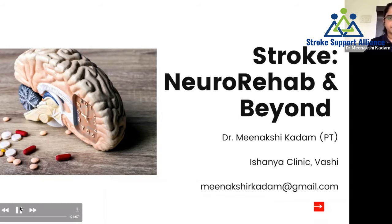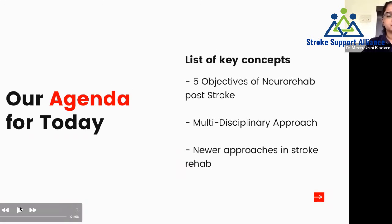For today's presentation, the agenda includes five objectives of neuro rehabilitation post-stroke — the main five objectives which we would like to achieve after a stroke attack and into neuro rehabilitation for better recovery. We are also going to see which other branches will help achieve this post-stroke recovery through a multidisciplinary approach, and then we'll touch on the newer approaches in stroke rehabilitation.